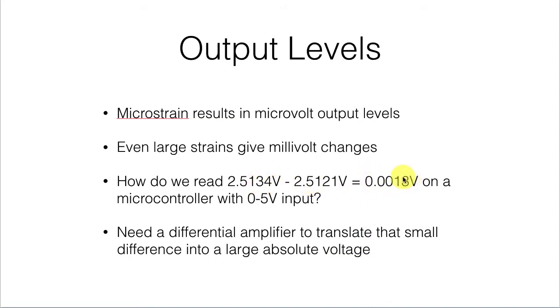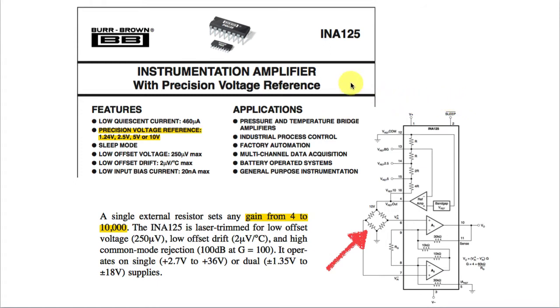And also, if this voltage difference is going positive and negative, we'll need to offset that to get it into the positive-only range, 0 to 5 input on the microcontroller. The way we accomplish that in our labs is typically with an instrumentation amplifier like this one. We're going to use an INA-125. It provides a gain from 4 to 10,000. It provides precision offset voltages here, which we can use to shift the output up or down so that we get our gain and our offset from this electric circuit. We're going to use that in the labs.